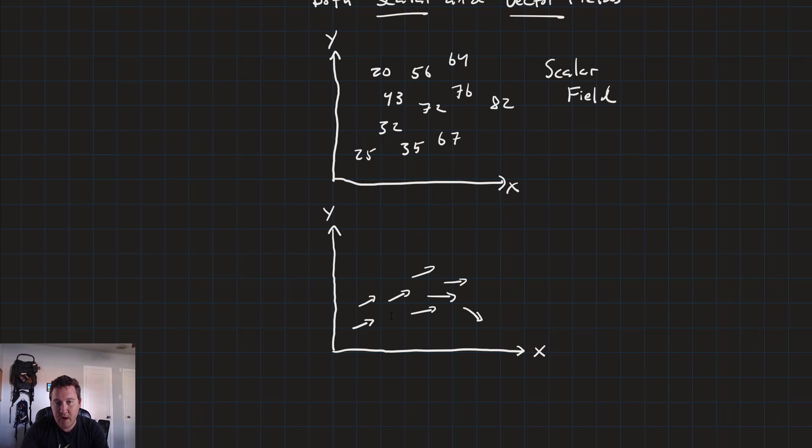Vector fields are amazing because they let us view the directions that things are moving in space in a really easy to read, easy to understand visual way. It's not hard to imagine some object here moving through the field like that.